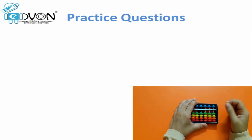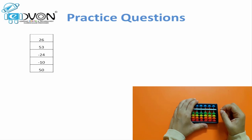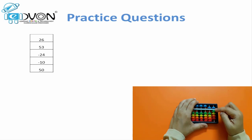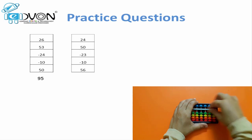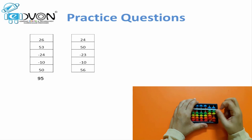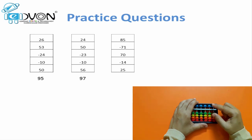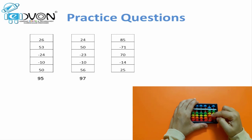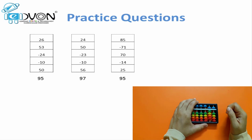Make your abacus 0. Let's practice a few questions for different values. Ready? First question: 26, plus 53, minus 24, minus 10, plus 50. Answer: 95. Make your abacus 0. Next: 24, plus 50, minus 23, minus 10, plus 56. Answer: 97. Next question — make your abacus 0: 85, minus 71, plus 70, minus 14, plus 25. Answer: 95.